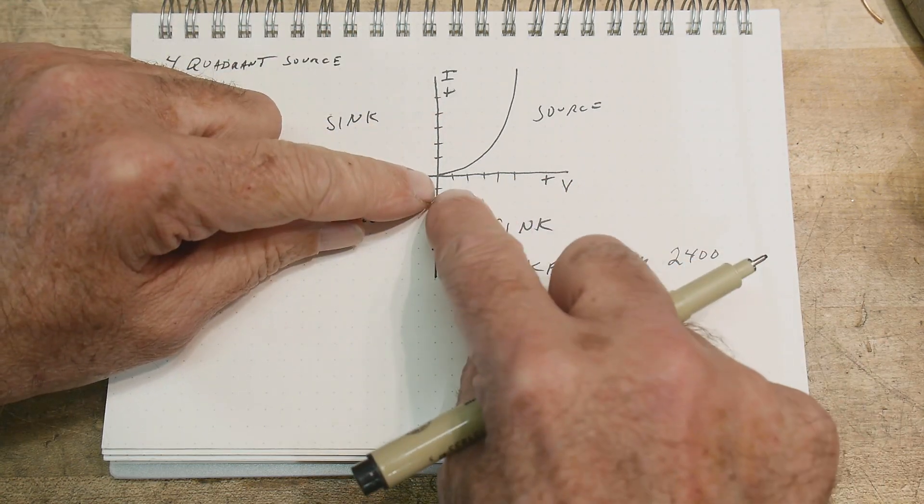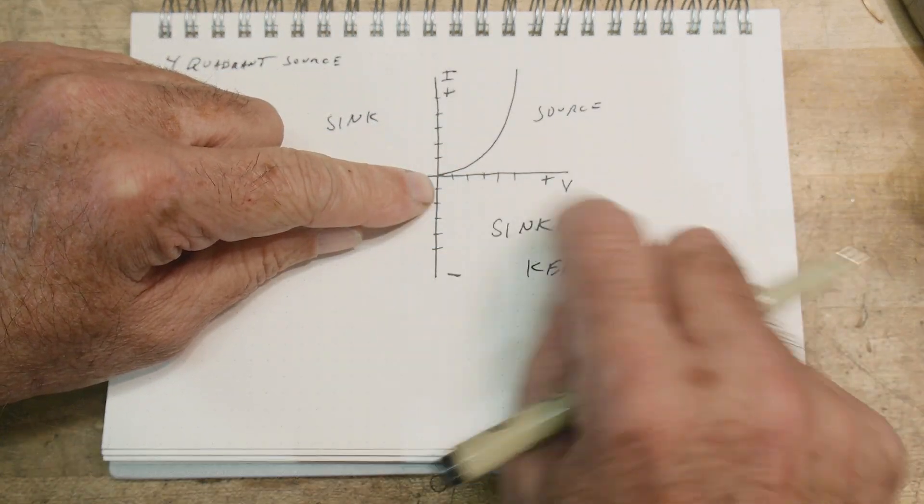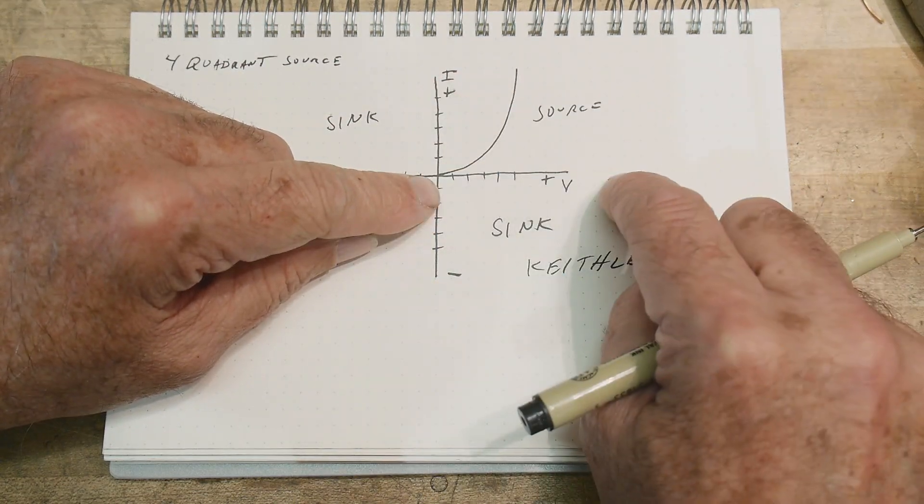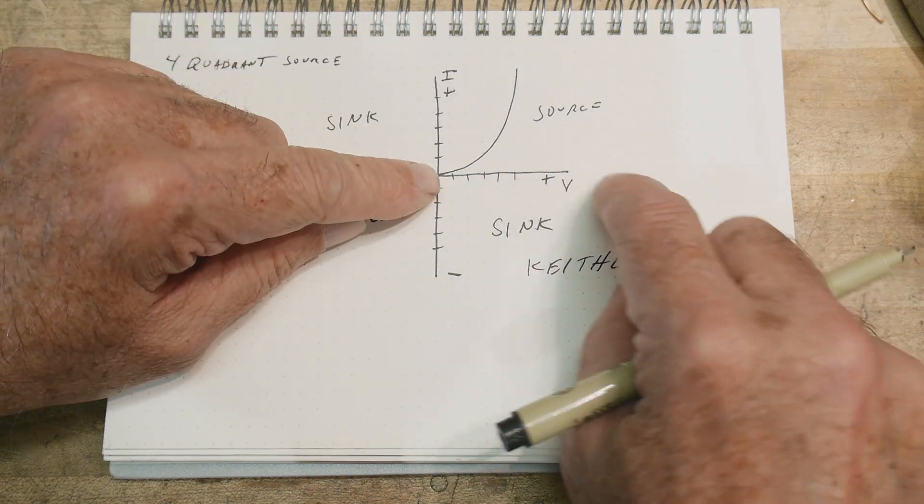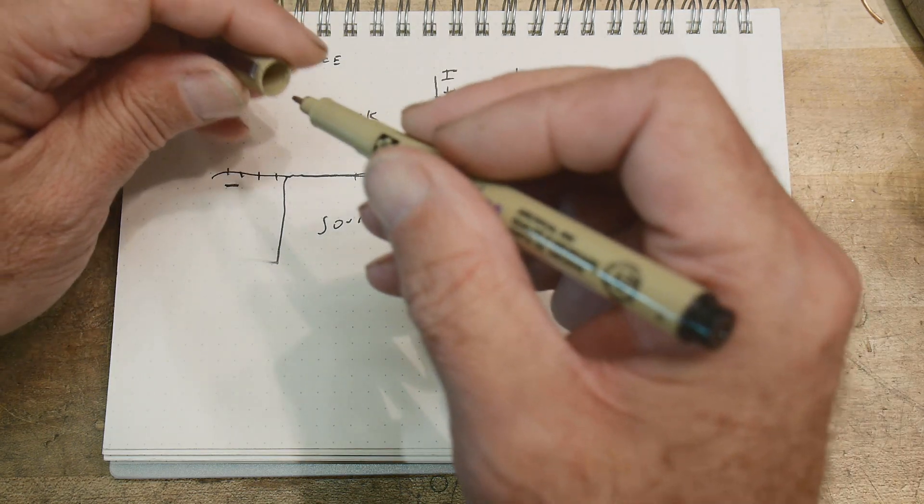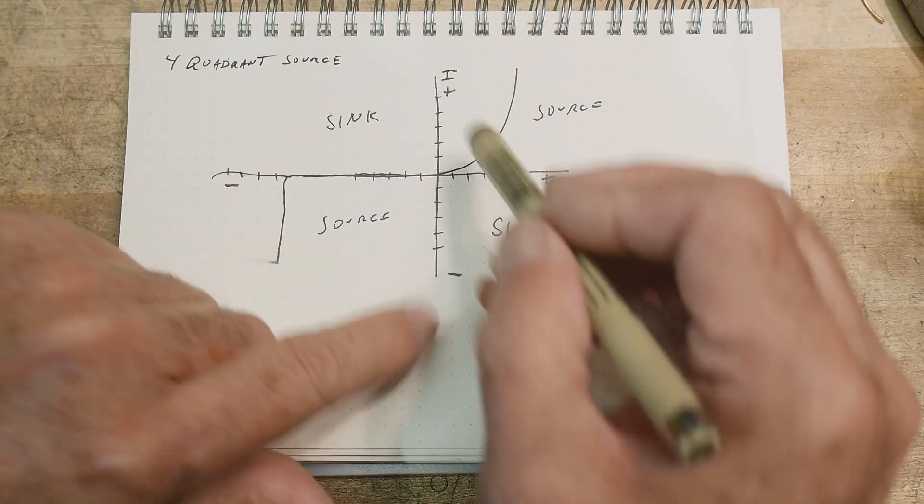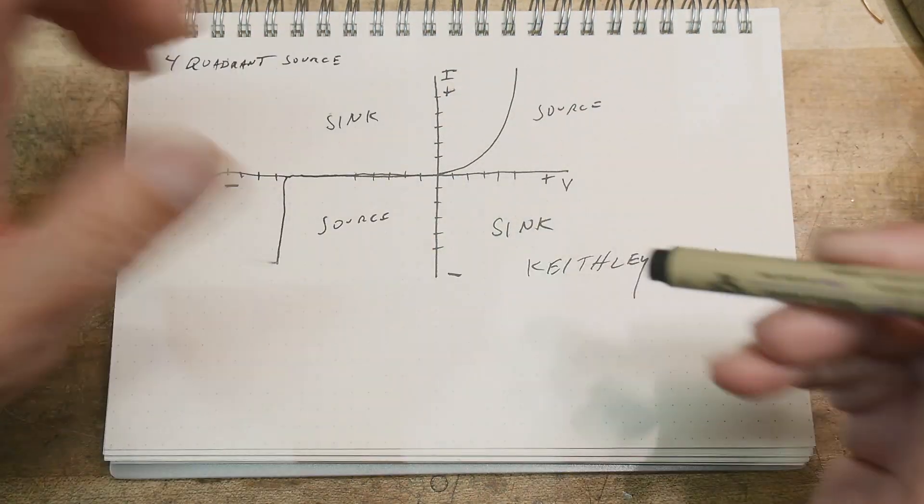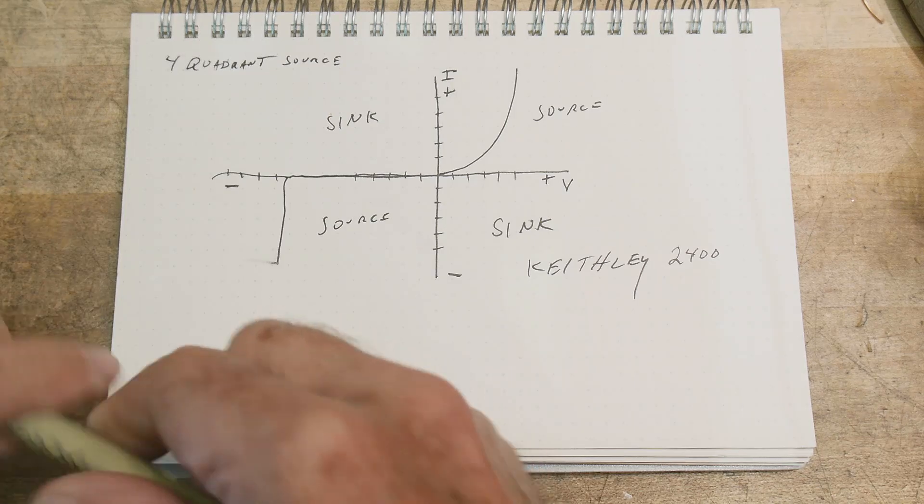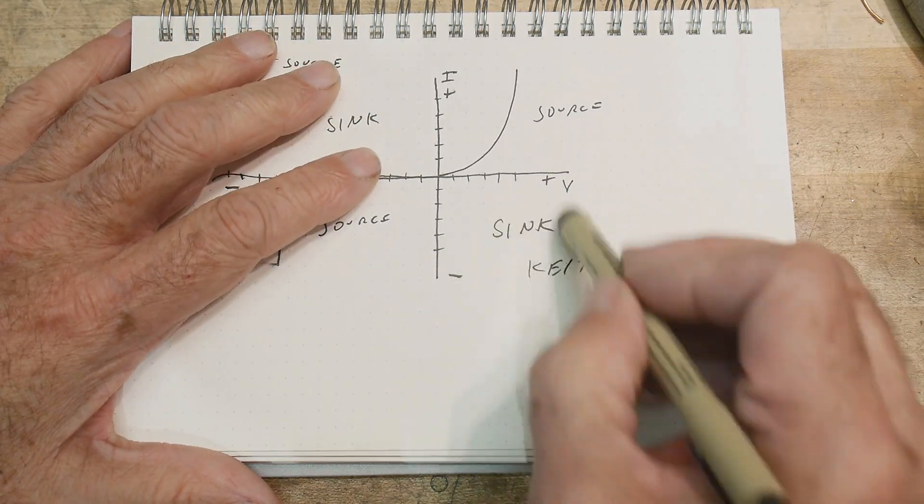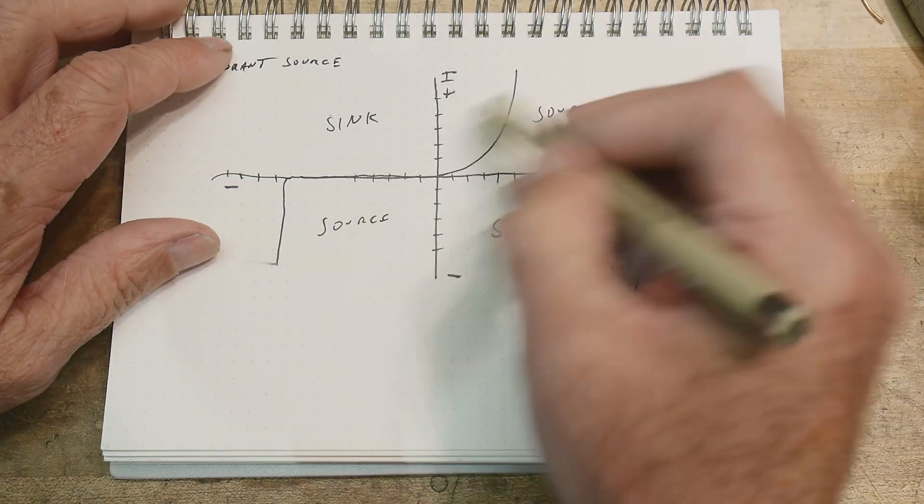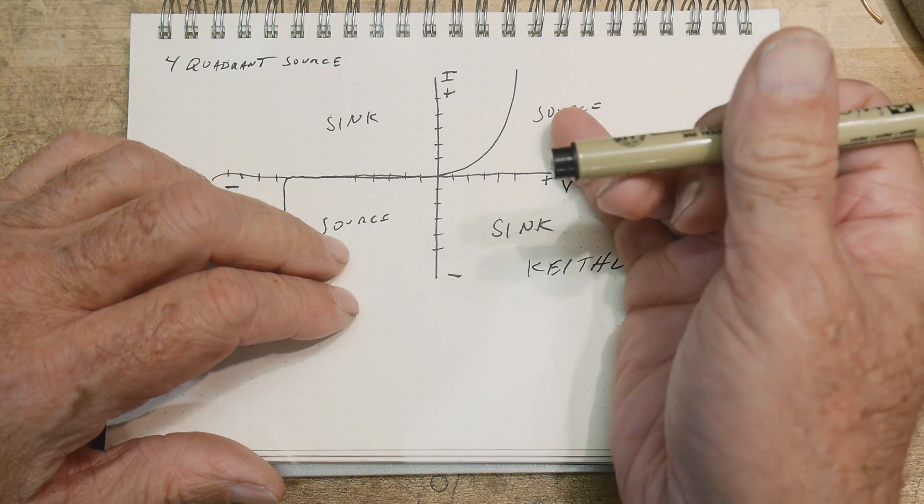So you can source voltage and measure current, or source current and measure voltage. So with diodes, you generally source current and then measure the voltage, but you could do just the opposite. You could source voltage and measure current. But because the Keithley allows you to operate in all four quadrants, it actually can be a dummy load as well. It can sink. And I bet you a lot of people have never used their Keithley in sink mode. It's kind of a rare thing to do. Most people are operating in these quadrants here, and it's very, very good for that.